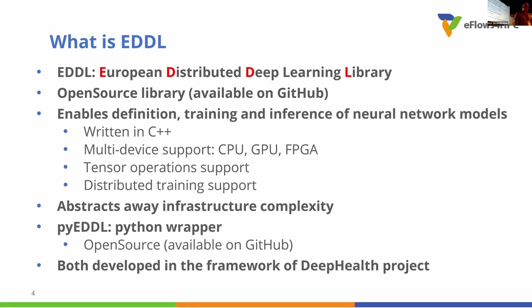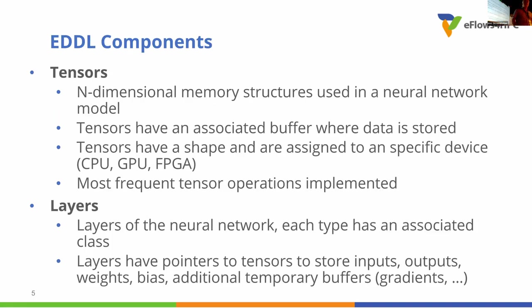EDDL also defines tensor operation support because for neural networks you need tensors for representing input data, output data, weights, and all this stuff. It also has distributed training support. This has been developed in the framework of the DeepHealth project, which has its final review tomorrow. The library is being used in eFlows and also in other products. Tensors are N-dimensional memory structures — not distributed among nodes but on a single node. They have an associated buffer which will reside on CPU, GPU, or FPGA depending on where you run the model.